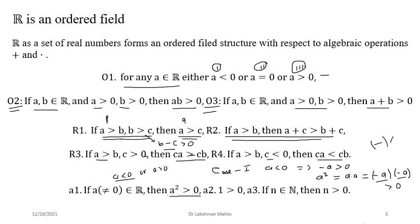Case 2: a > 0. Then a² = a · a, and since both a and a are positive, the product of two positive numbers is greater than zero by O2. So a² > 0. Also, 1² = 1, and since 1² > 0 for any non-zero number, we conclude 1 > 0.